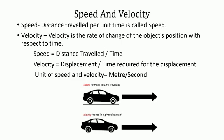Speed and Velocity. Speed is the distance travelled per unit time. The formula for speed is: speed equals distance travelled divided by time required. Velocity is the distance traversed by a body in a specific direction per unit time. Velocity equals displacement divided by the period of time required for the displacement. Velocity is a vector quantity whereas speed is a scalar quantity. The unit of speed or velocity is meter per second.